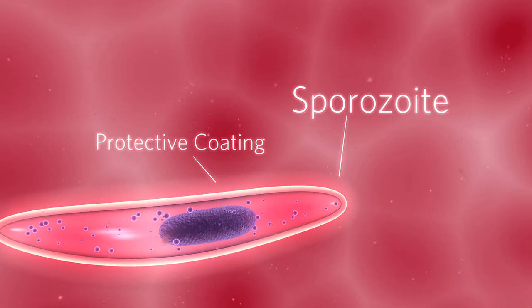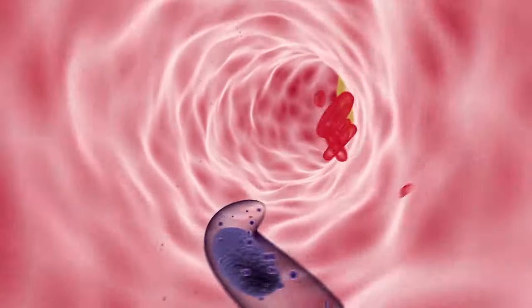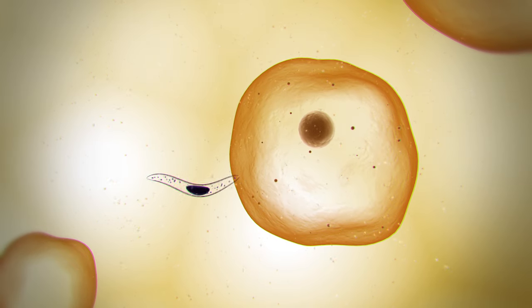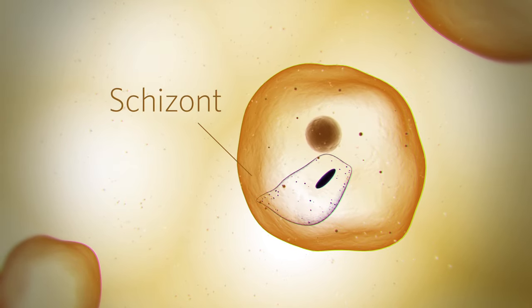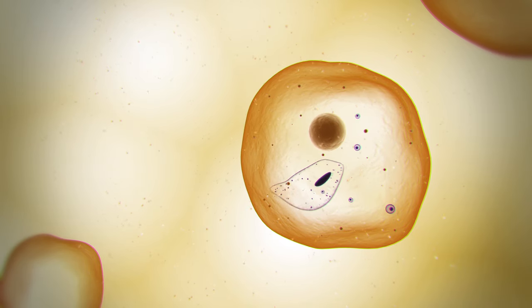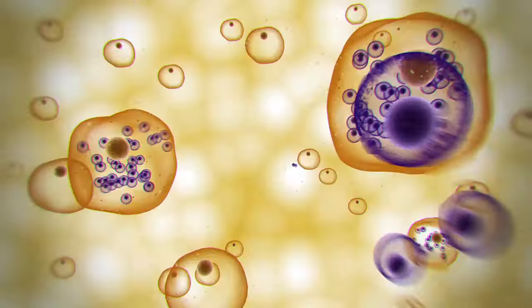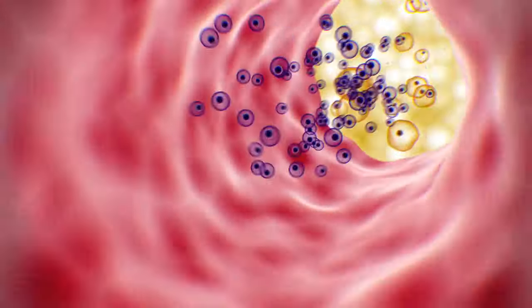They quickly make their way to the liver and infect liver cells with the help of the circumsporozoite protein. The parasite develops into mature schizones, creating tens of thousands of myozoites, which burst out of the cell and journey back toward the bloodstream.